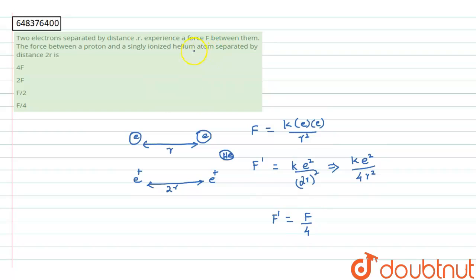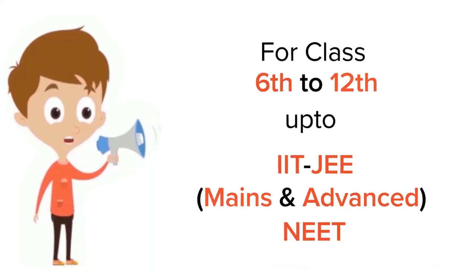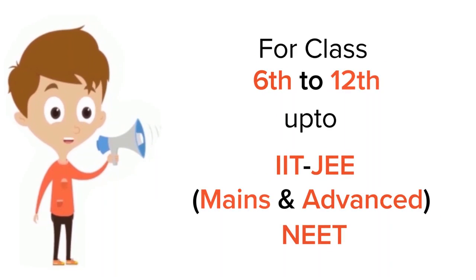So the force between the proton and the singly ionized helium atom separated by distance 2r is F divided by 4. Therefore, option D is the correct answer.